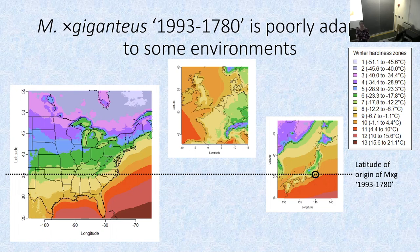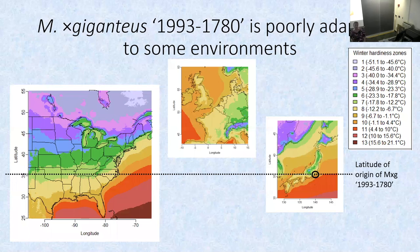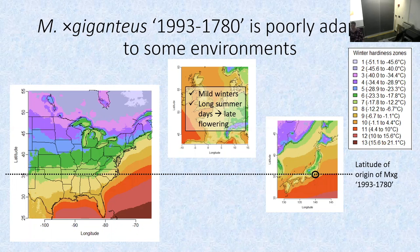These three maps show hardiness zones for Japan, Europe, and the US, lined up by latitude, showing the minimum winter temperature typically seen. The approximate collection location of the clone is in hardiness zone eight or nine. Europe has about the same hardiness zone, so it handles winters there. Being at a more northern latitude, it flowers later because summer days are longer, which is good for biomass yield — once the plant flowers, it basically stops vegetative growth for the season.